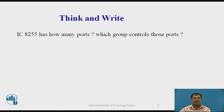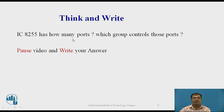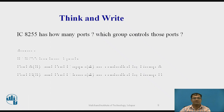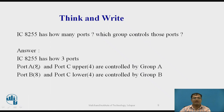Before the program, think about this question and pause the video: IC 8255 has how many ports, and which group controls those ports? The answer: IC 8255 has three ports. Port A (8-bit) and Port C upper (4-bit) are controlled by Group A. Port B and Port C lower part are controlled by Group B.